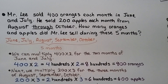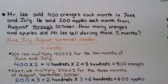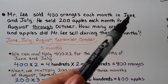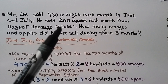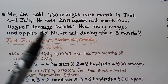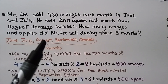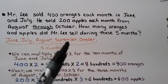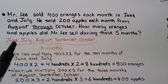Mr. Lee sold 400 oranges each month in June and July. He sold 200 apples each month from August through October. How many oranges and apples did Mr. Lee sell during these five months? He sold oranges in June and July, and apples in August, September, and October — those are our five months.